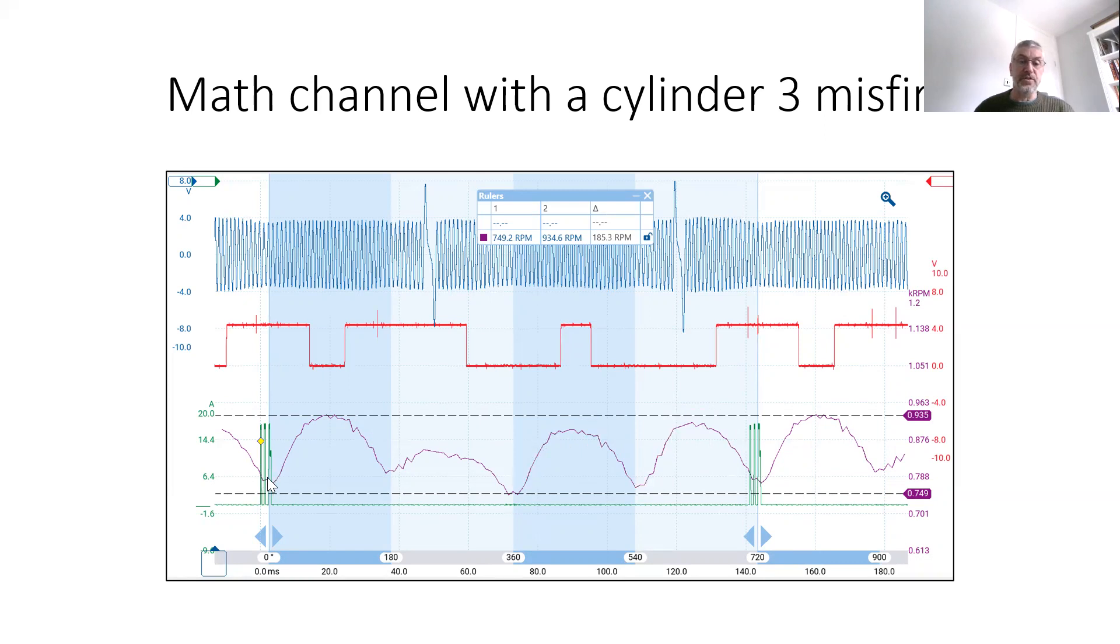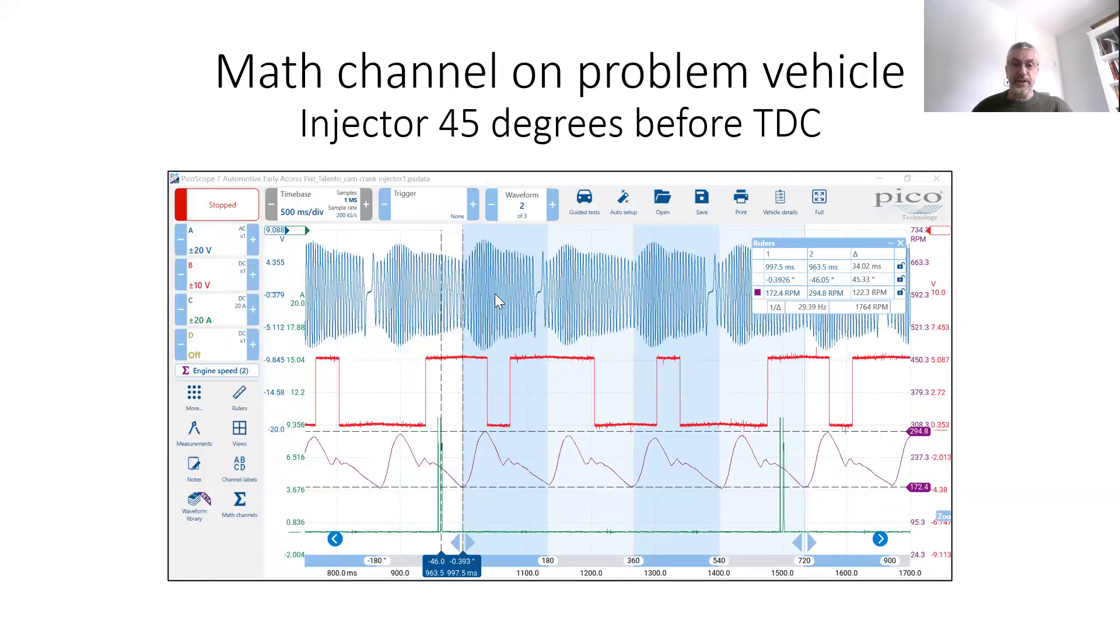So what we normally do is we line up when the injector fires with the camshaft, we then use the camshaft position to identify which cylinder is given our low compression using the firing order.